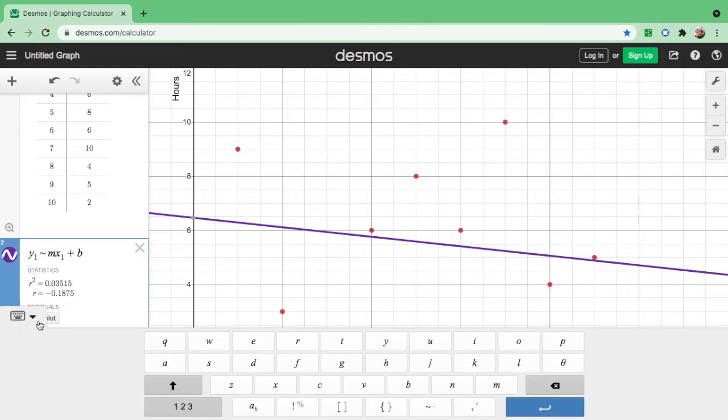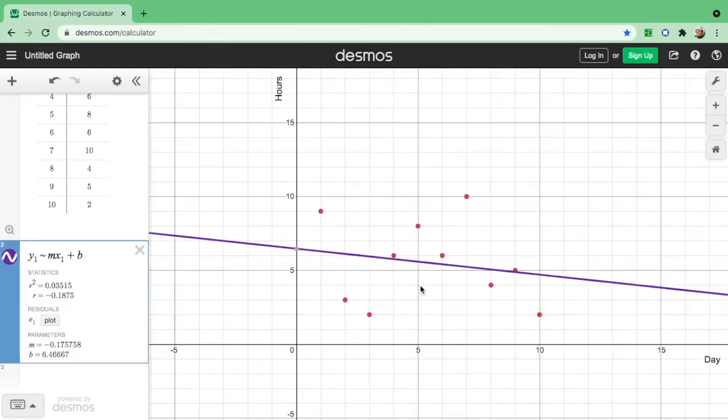So this is y equals mx plus b. So here is your graph. So do you see any relationship? It is clearly showing on the graph that x, the number of days, and the number of hours are not correlated with each other.